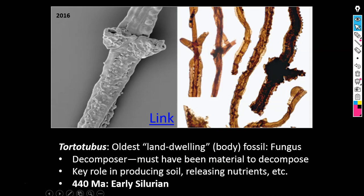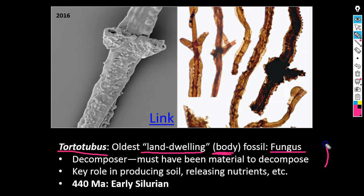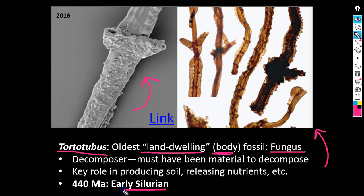This colonization of land probably happens by the Silurian, maybe the Ordovician. But interestingly, the earliest examples of organisms continuously living on land aren't plants at all — and they certainly aren't animals. The earliest body fossil examples are fungi. This little organism called Tortotubus is the earliest example of a continuously land-dwelling body fossil. Fungi still play an incredibly important role as decomposers, recycling nutrients within modern ecosystems, and they've got to evolve in lockstep with plants. We have this organism by the early Silurian — no direct body fossil evidence in the Ordovician, but our earliest example of things continuously living on land appears then.